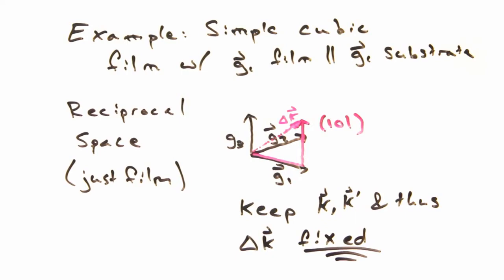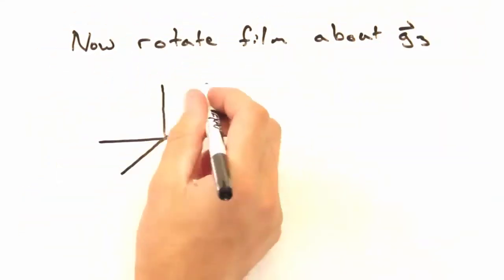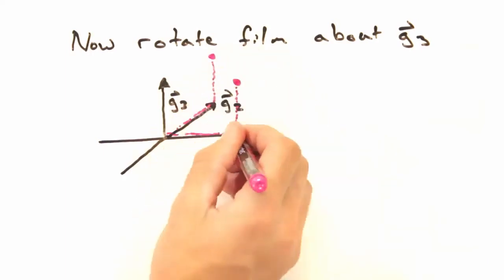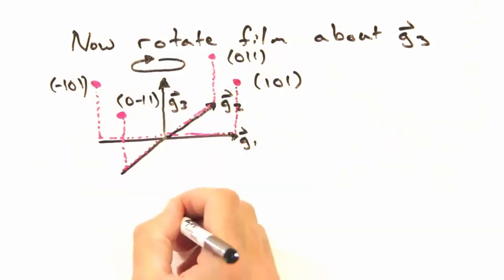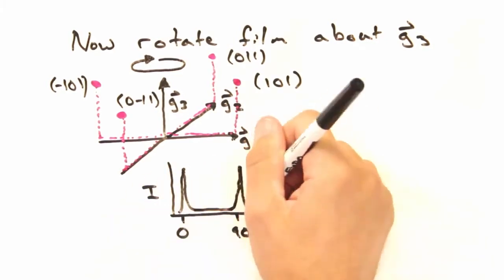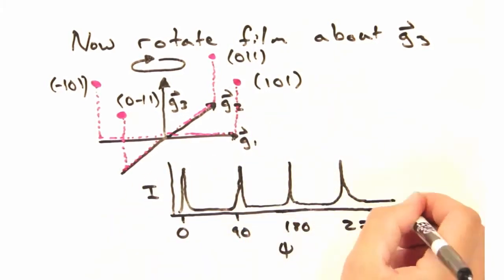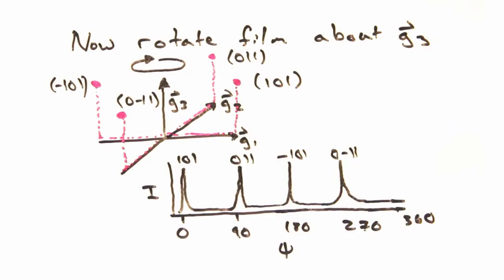So let's choose the sample 101 peak to align our delta k-vector to and keep the source and detector fixed in this position. Then, as we rotate the sample, the reciprocal points cross into the delta k-vector and we get reflections every 90 degrees for the 101, 011, minus 101, and the 0, minus 11 reflections respectively.